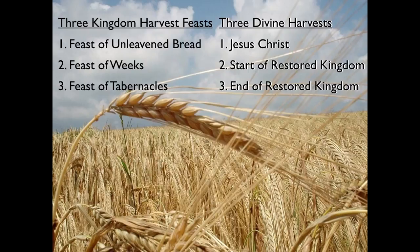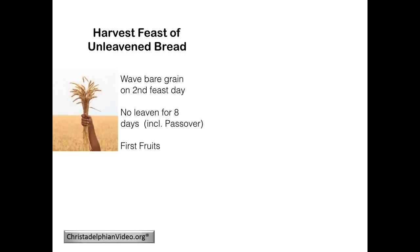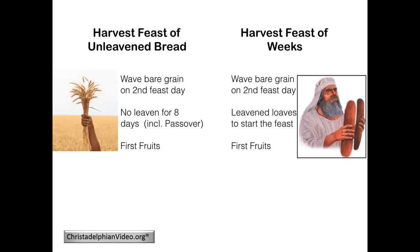Yahweh imposed very different terms for observing each of these three separate agriculturally-based ritual celebrations. There are some very dramatic differences that should draw our attention. The Feast of Unleavened Bread highlighted the removal of every trace of leaven — not only from their diet for those eight days, which also included Passover, but the leaven even had to be removed from their homes. However, the second Feast Week, the Feast of Weeks that was 50 days after the second day of the Feast of Unleavened Bread, demanded the presence and promotion of leaven.